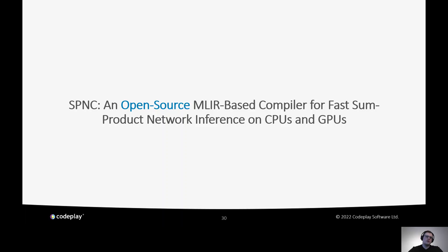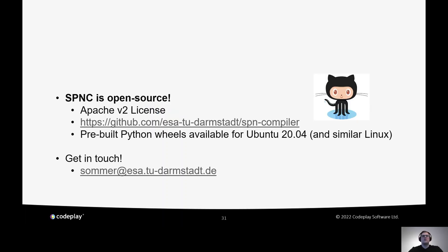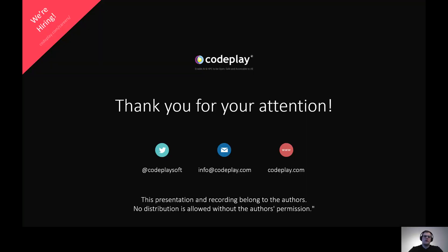SPNC is completely open source under the Apache 2.0 license, accessible on GitHub. We have extensive documentation on building the compiler and all dependencies from source, and we also have pre-built Python wheels available for Ubuntu 20.04 and similar Linux distributions that you can directly download and use with your Python SPN application. If you have any questions, feel free to get in touch via the email listed. Thank you very much for listening, and I hope to see you again soon in person.